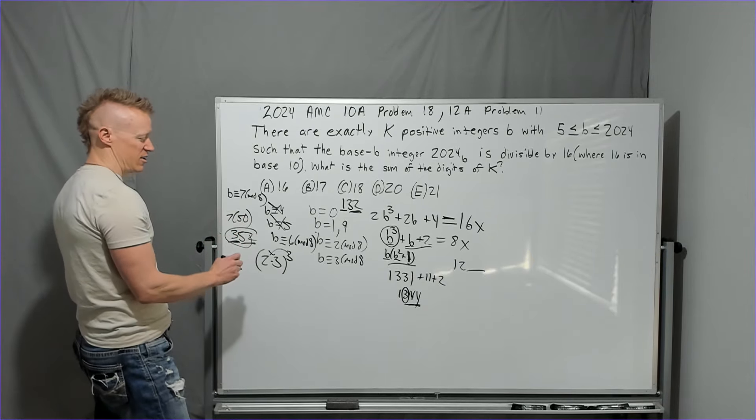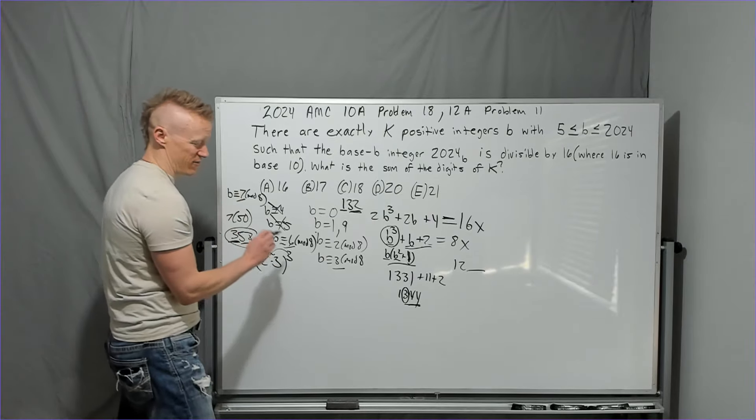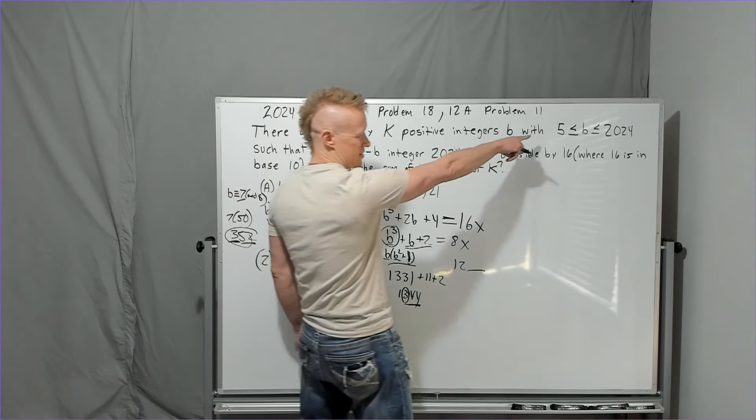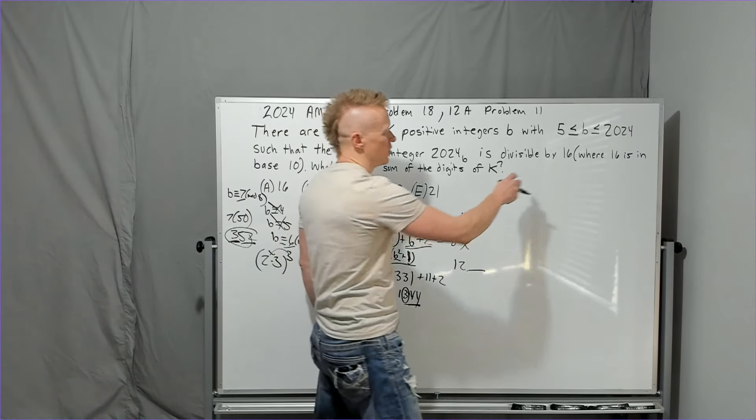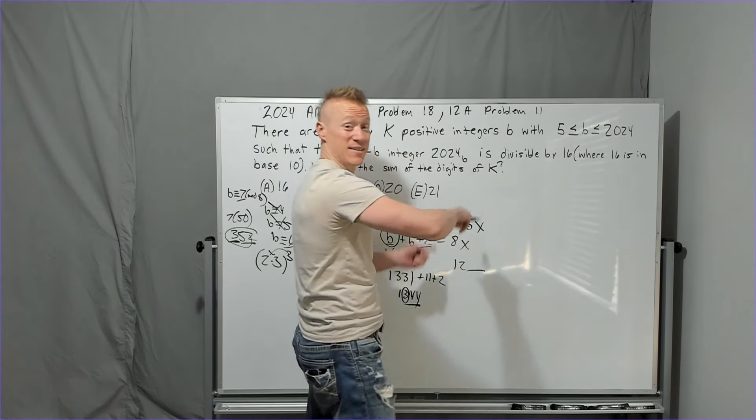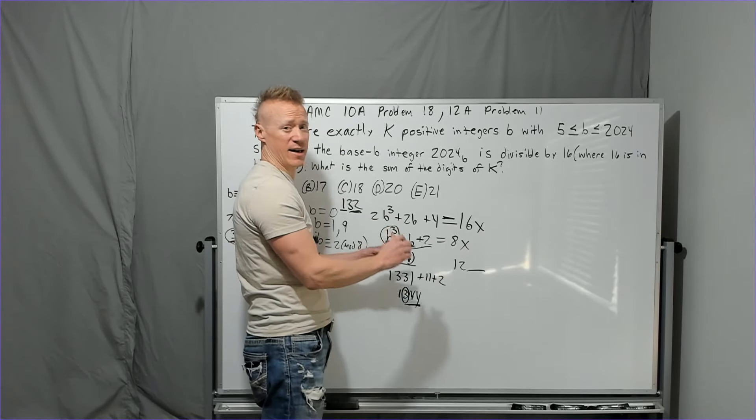So you get 3 that work. You get when it's a remainder of 3, 6, and 7. However, we have to check this constraint they gave us at the beginning of the problem. So 3 is not going to work, but that doesn't mean 11 doesn't work. Just the first value of 3 mod 8 doesn't work.